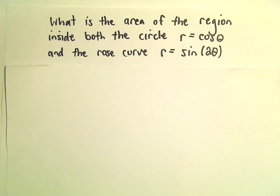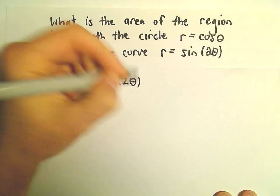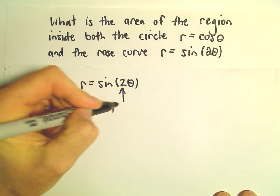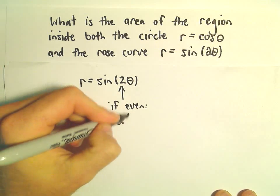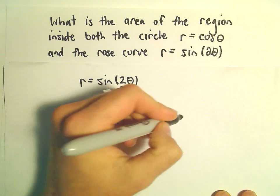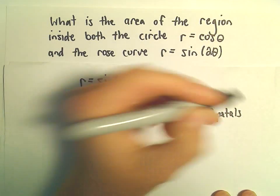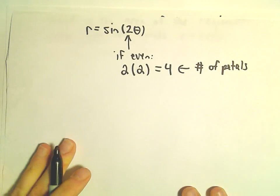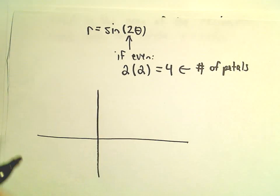The first one to graph is r equals sine of 2 theta. For a rose curve, recall if the number in front of theta is even, we take 2 and multiply it by whatever that number is — in this case that's 4. That's going to give us the number of petals on our rose curve.